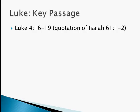We'll read starting in verse 16: "When Jesus came to Nazareth, where he had been brought up, he went to the synagogue on the Sabbath day, as was his custom. He stood up to read, and the scroll of the prophet Isaiah was given to him. He unrolled the scroll and found the place where it was written, 'The Spirit of the Lord is upon me, because he has anointed me to bring good news to the poor. He has sent me to proclaim release to the captives, and recovery of sight to the blind, to let the oppressed go free, to proclaim the year of the Lord's favor.' And he rolled up the scroll, gave it back to the attendant, and sat down. The eyes of all in the synagogue were fixed on him. Then he began to say to them, 'Today, this scripture has been fulfilled in your hearing.'"